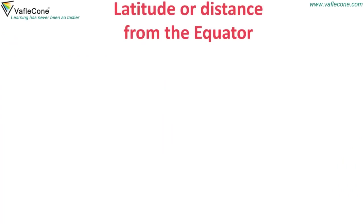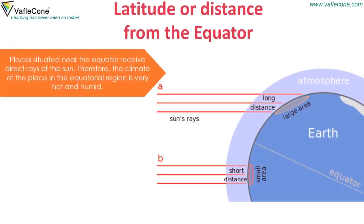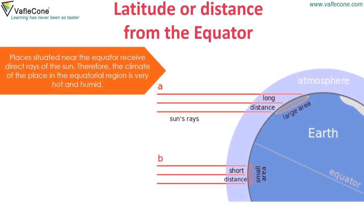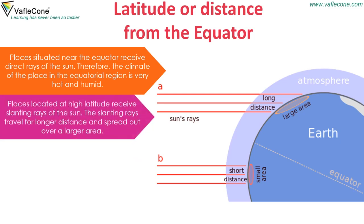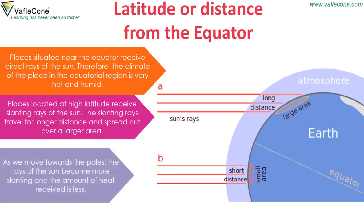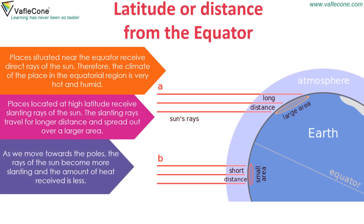Latitude, or distance from the equator: places situated near the equator receive direct rays of the sun. Therefore, the climate of places in the equatorial region is very hot and humid. Places located at high latitudes receive slanting rays of the sun. The slanting rays travel a longer distance and spread out over a large area. As we move towards the poles, the rays of the sun become more slanting and the amount of heat received is less.